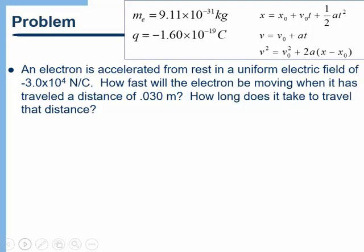An electron is accelerated from rest in a uniform electric field of negative 3 × 10⁴ newtons per coulomb. How fast will the electron be moving when it's traveled a distance of 0.030 meters? And how long does it take to travel that distance?